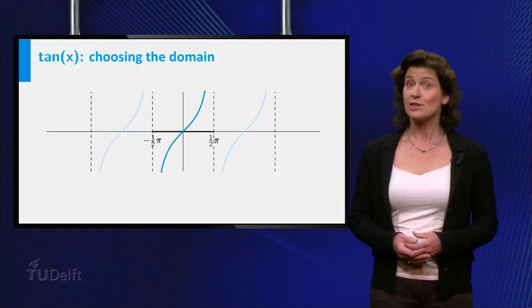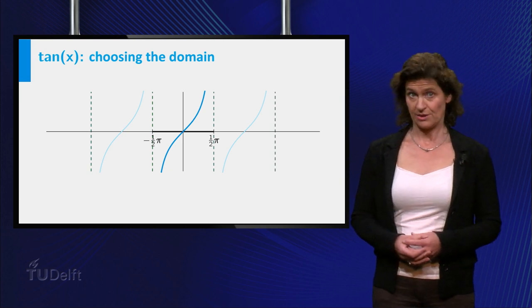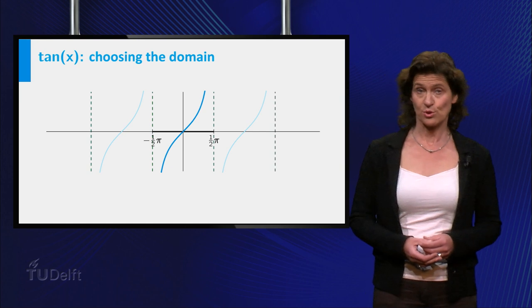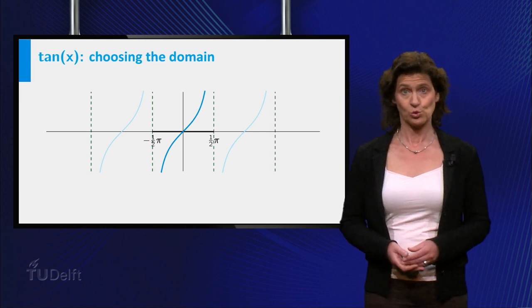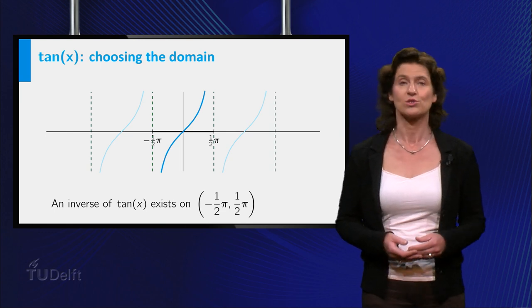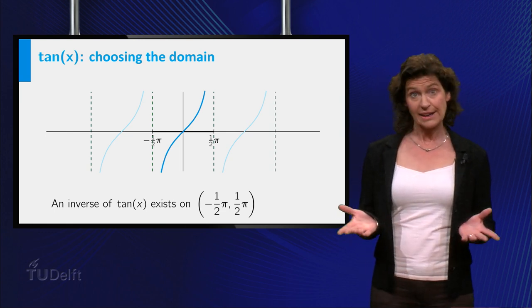Now take a serious look at the graph of the tangent. You see it is periodic and has vertical asymptotes at multiples of pi over 2. So the interval from minus pi over 2 to plus pi over 2 is convenient for the domain to consider, right?